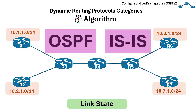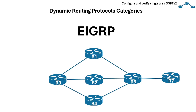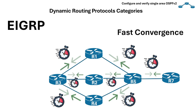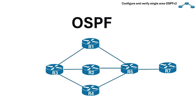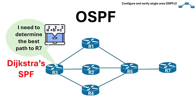Examples of link state protocols are OSPF and IS-IS. Cisco also created their proprietary protocol EIGRP. It's a hybrid routing protocol that combines features of both distance vector and link state protocols to provide fast convergence and efficient routing. OSPF is an example of a link state protocol. OSPF uses a mathematical algorithm called Dijkstra's SPF algorithm to determine the best path to every IP destination in the network.